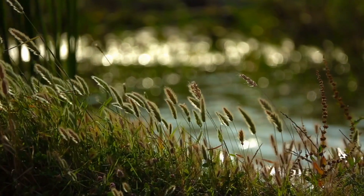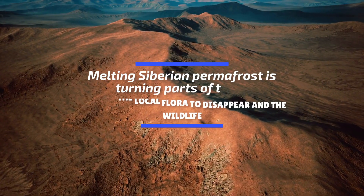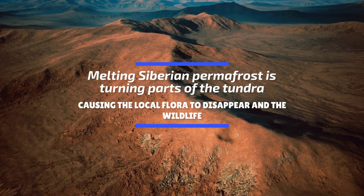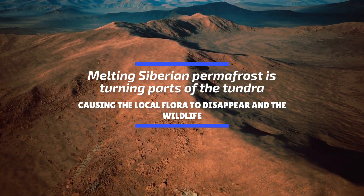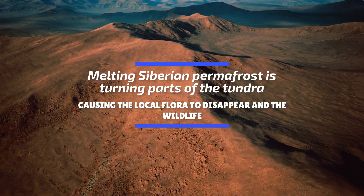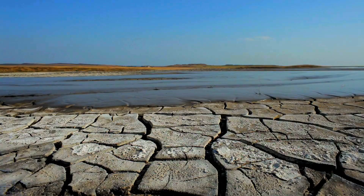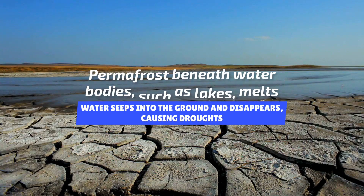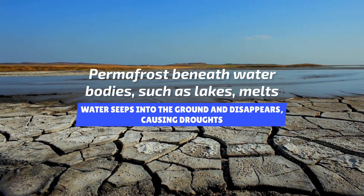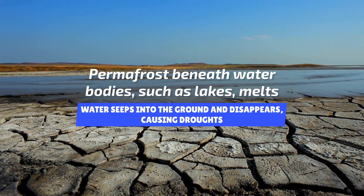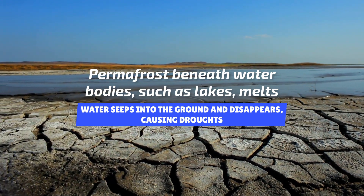Damage to ecosystems and their biodiversity: Melting Siberian permafrost is turning parts of the tundra into muddy landscapes, causing the local flora to disappear and the wildlife that feeds on it to starve. Furthermore, when the permafrost beneath water bodies such as lakes melts, the water seeps into the ground and disappears, causing droughts.